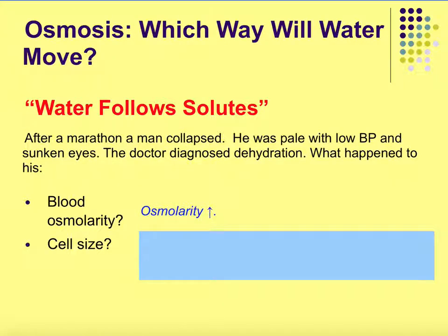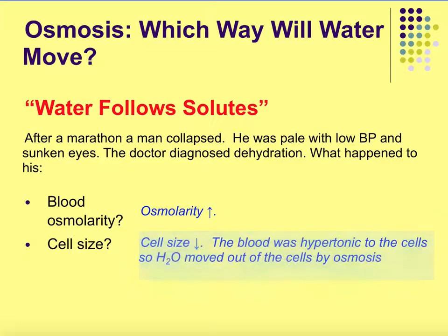Now if his blood osmolarity is high, what would that do to his cell size? Remember, water follows solutes. So if your blood has a higher concentration of solutes compared to your cells, water would leave your cells into the blood, which would mean your cells would shrink. The blood will be hypertonic to the cells, and water moves from hypo to hypertonic — low to higher solutes — so your cells will shrink.